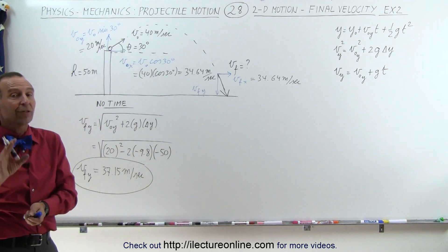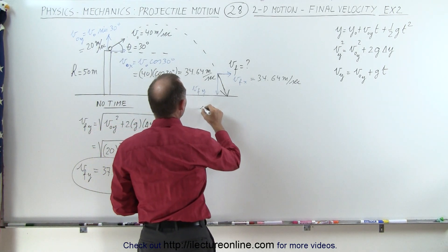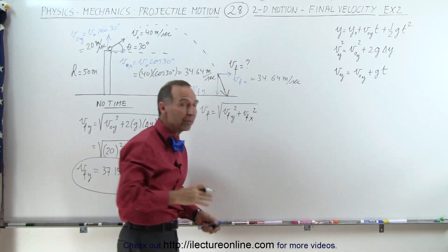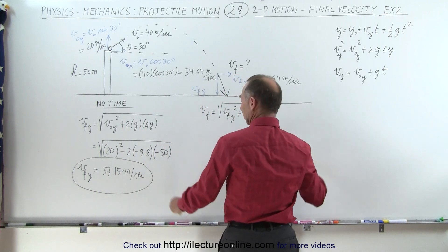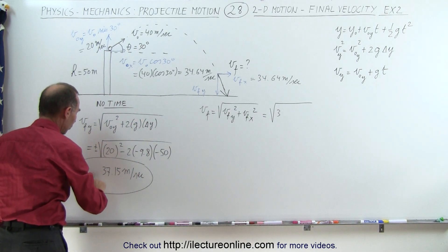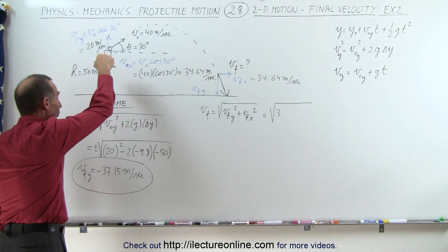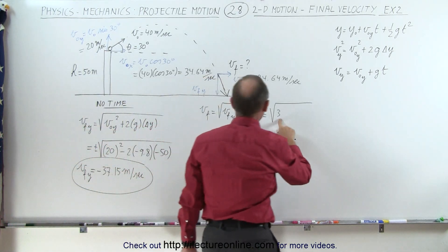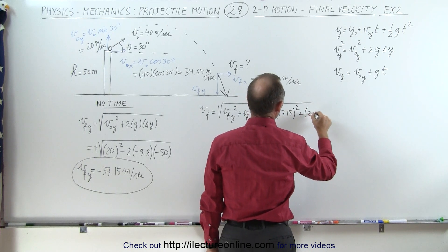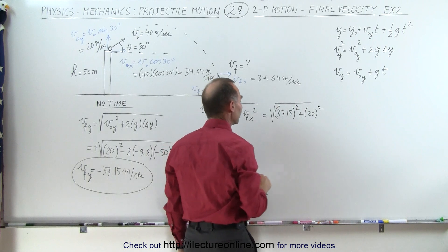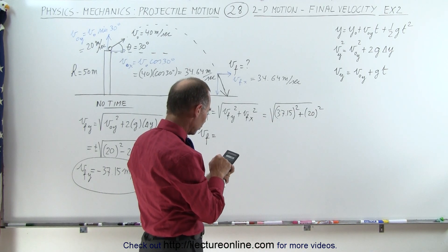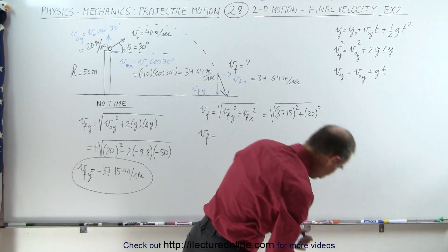That's only the final velocity in the y direction, not the total final velocity. The final velocity is found using the Pythagorean theorem: the square root of v_final_y squared plus v_final_x squared. Note that v_final_y is actually negative 37.15 m/s since it's pointing downward, but since we're squaring it, the sign doesn't matter. So we get the square root of 37.15 squared plus 34.64 squared, which equals 42.2 meters per second.